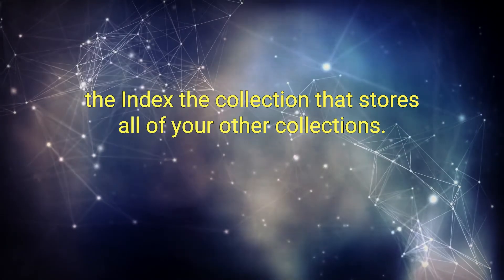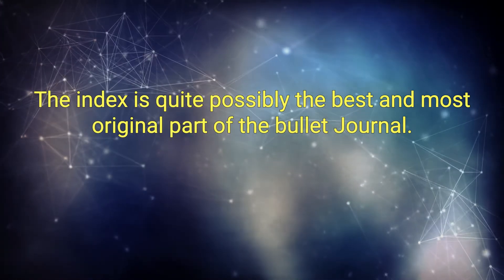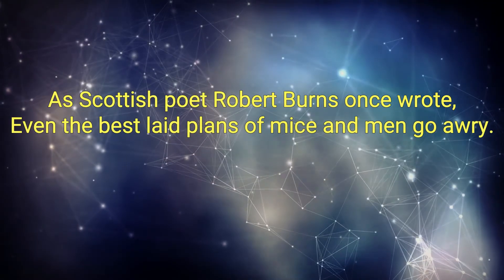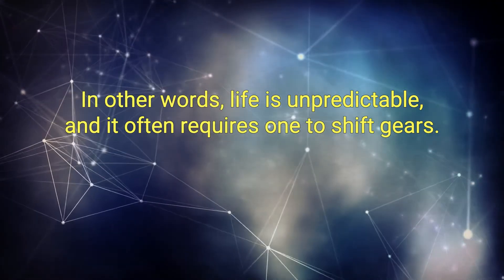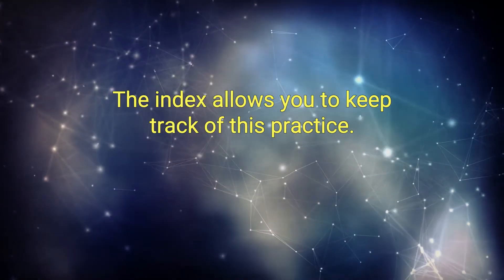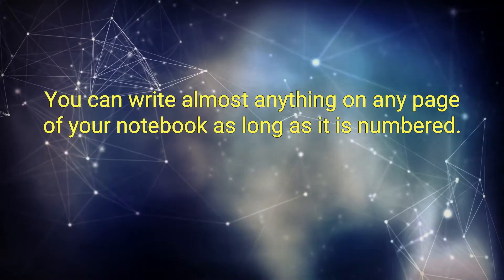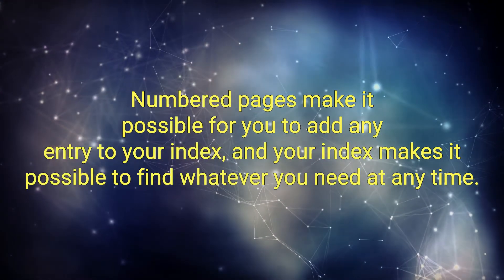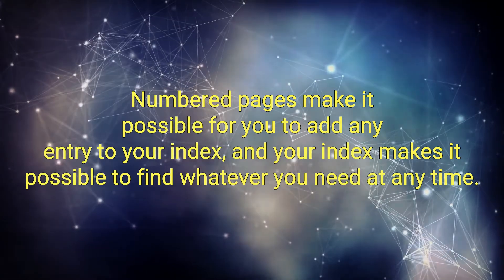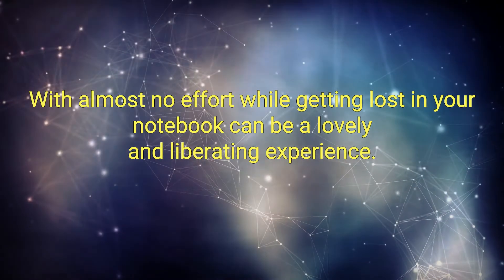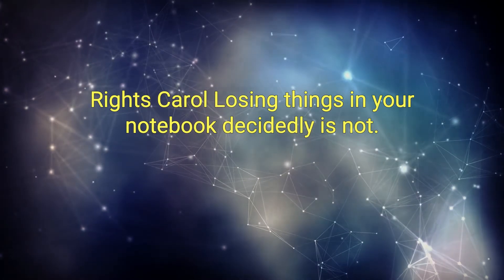The index: the collection that stores all of your other collections. The index is quite possibly the best and most original part of the Bullet Journal. As Scottish poet Robert Burns once wrote, even the best laid plans of mice and men go awry. In other words, life is unpredictable and it often requires one to shift gears. The index allows you to keep track of this practice. You can write almost anything on any page of your notebook as long as it is numbered. Numbered pages make it possible for you to add any entry to your index, and your index makes it possible to find whatever you need at any time with almost no effort.